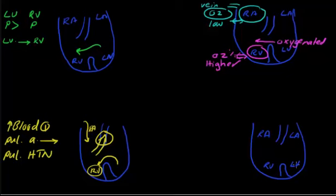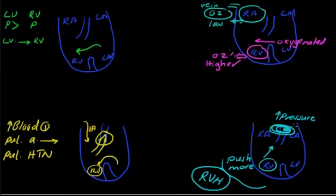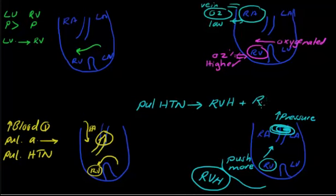The next and final step: if you have pulmonary hypertension, the pressure in the pulmonary artery increases. As a result, the right ventricle tries to push more blood to the pulmonary artery, but unfortunately it cannot. Because of this increased afterload, you will have right ventricular hypertrophy. When you have pulmonary hypertension, the end result is right ventricular hypertrophy and increased right ventricular pressure.